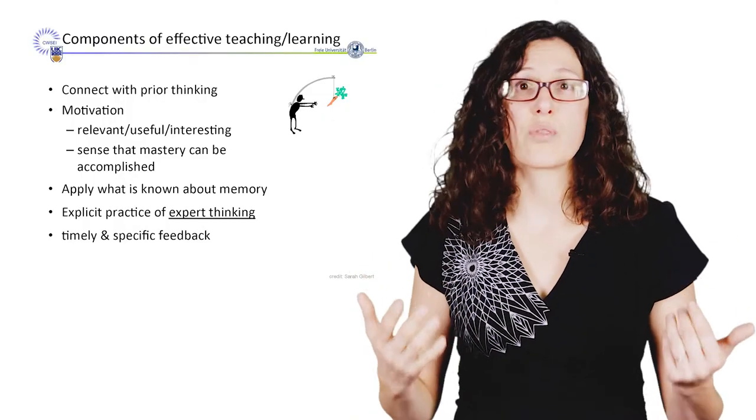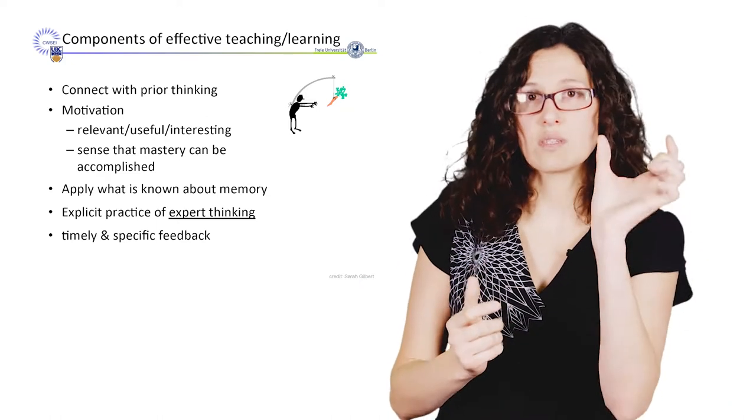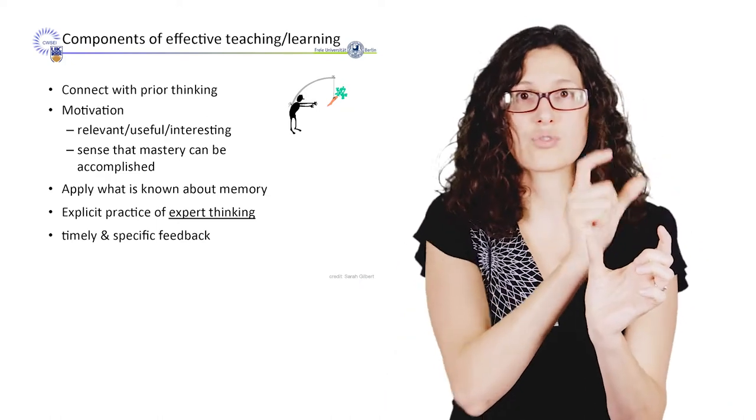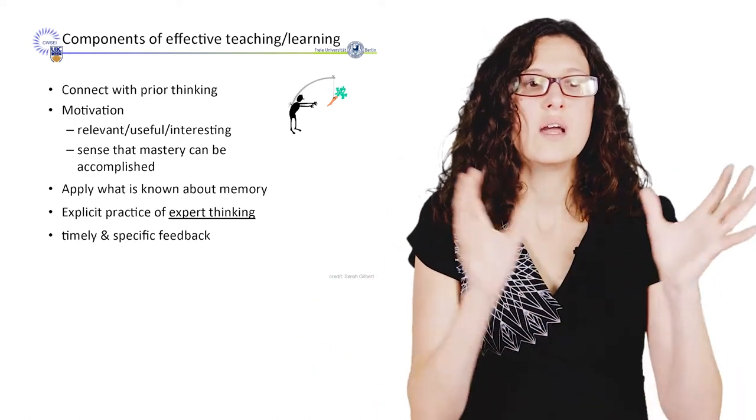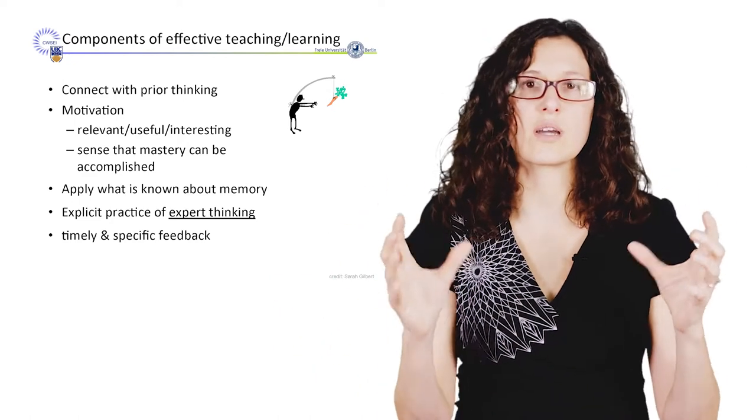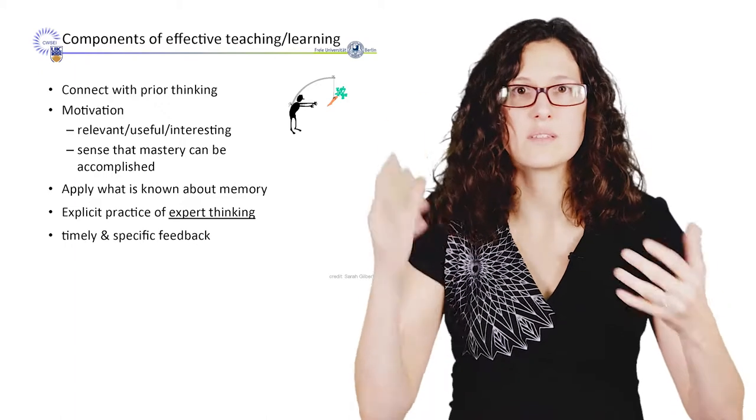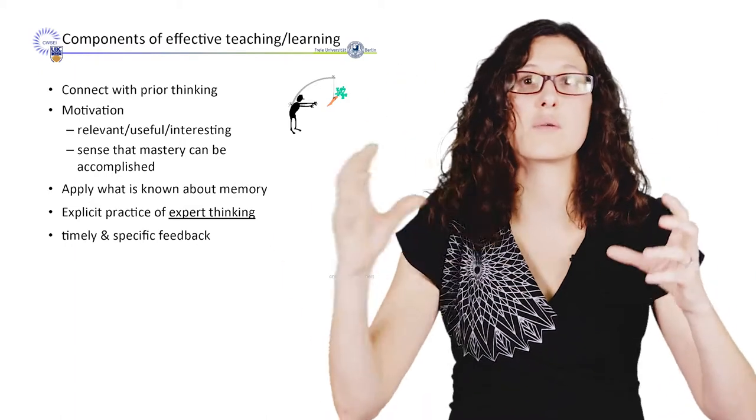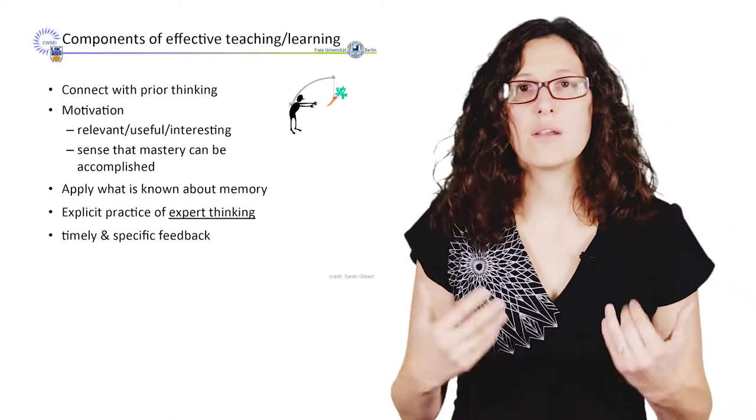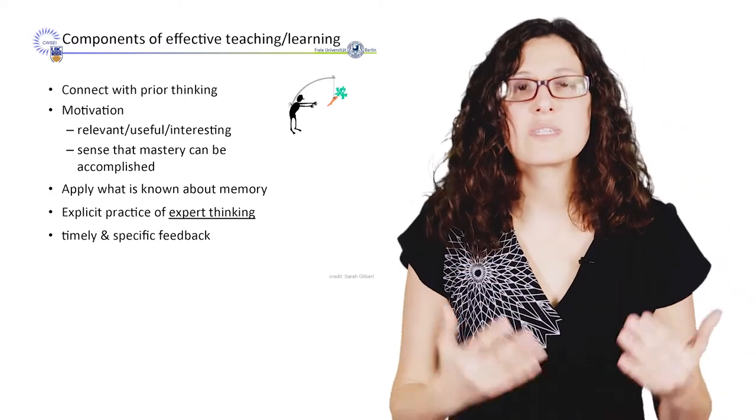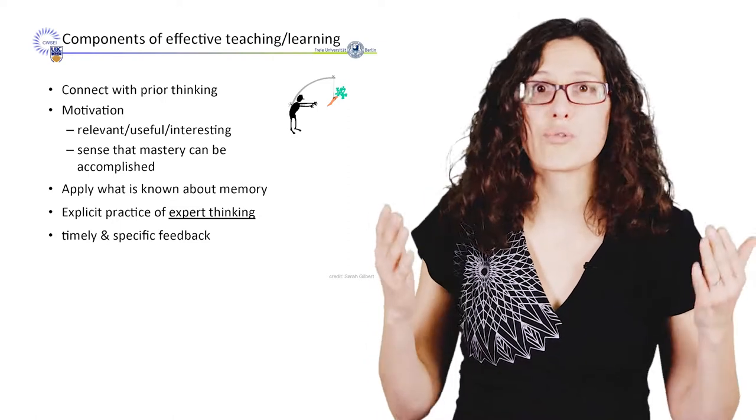And that leads to the next point, which is explicit practice of expert thinking. So the experts might know this is an area code or this is a certain structure, whereas a novice might not see that. And so it's important for us to help them see the structures that could help them optimize their memory and their thinking and connecting it to their prior knowledge. So we need to not only model that as experts, but explicitly give them the opportunity to practice it.